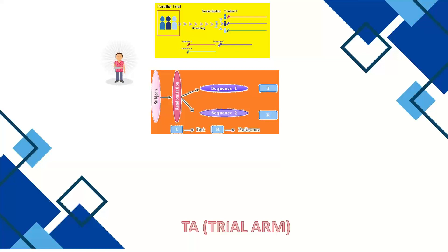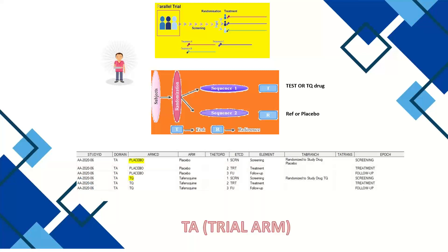In a parallel study, the subject is assigned only one treatment — either a test drug, another molecule, a reference drug, or a placebo. Here you can see the dataset we frame: the first three records are related to placebo and the next three to TQ, because we have a screening stage, a treatment element, and a follow-up element. Three stages: the subject is assigned to placebo, and the other three to TQ.